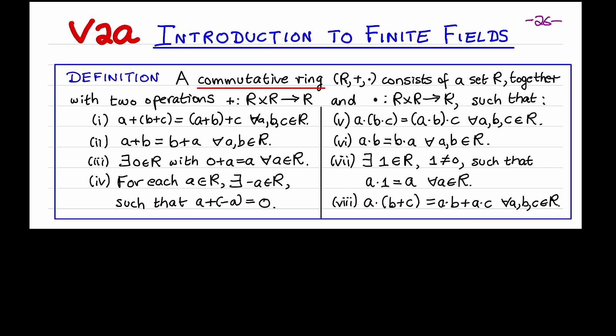Multiplication is associative and commutative. There is an element one in the ring different from the zero element, which serves as a multiplicative identity in the sense that a times one equals a for all ring elements a. And finally, multiplication is distributive over addition.